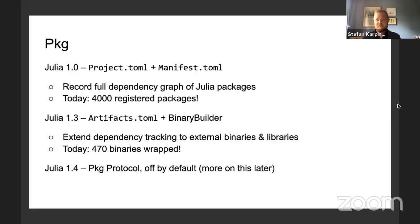In 1.3, we introduced artifacts and binary builder — a way to produce platform-specific binaries and libraries. This extends our tracking of reproducibility all the way down to the binary dependency level. We've gone from a situation where it's common for people to try to build libraries on their clients and fail, to things just working because binary builder artifacts are just tarballs that unpack and work on your system. In less than a year, we now have 470 binaries wrapped — we're well on our way to having our own cross-platform distribution.